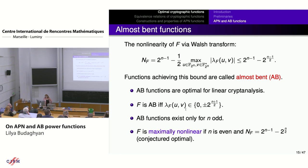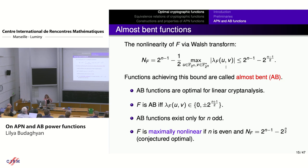Non-linearity can be characterized by the Walsh transform of the function, and actually many other cryptographic properties — including the APN property — are also characterized by it. The Walsh transform is defined at a pair of elements (u, v) with v non-zero; these values are called Walsh coefficients. The set of all Walsh coefficients is called the Walsh spectrum, and the set of their absolute values is the extended Walsh spectrum.